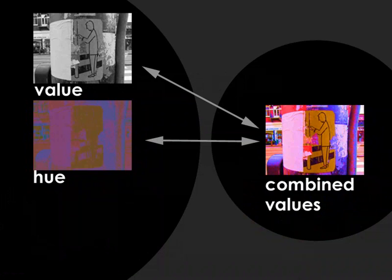So by applying value and hue, we get an image, but we have no saturation control. In this case, it's just pure saturation.